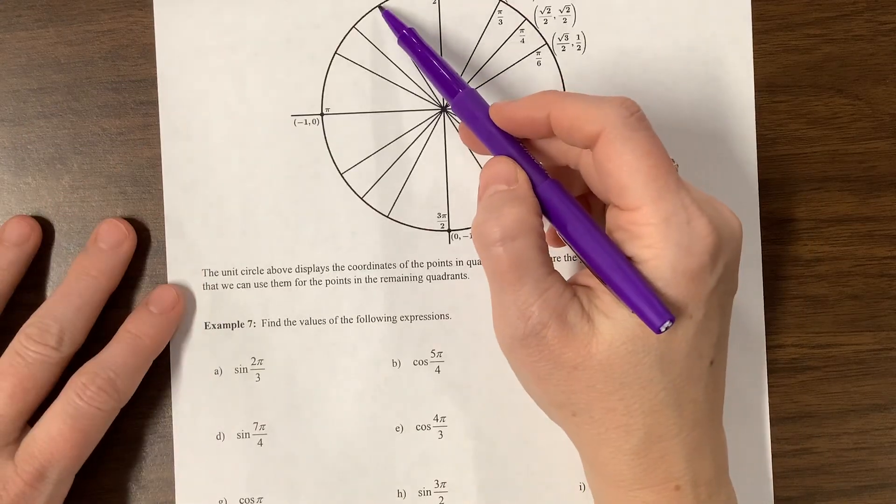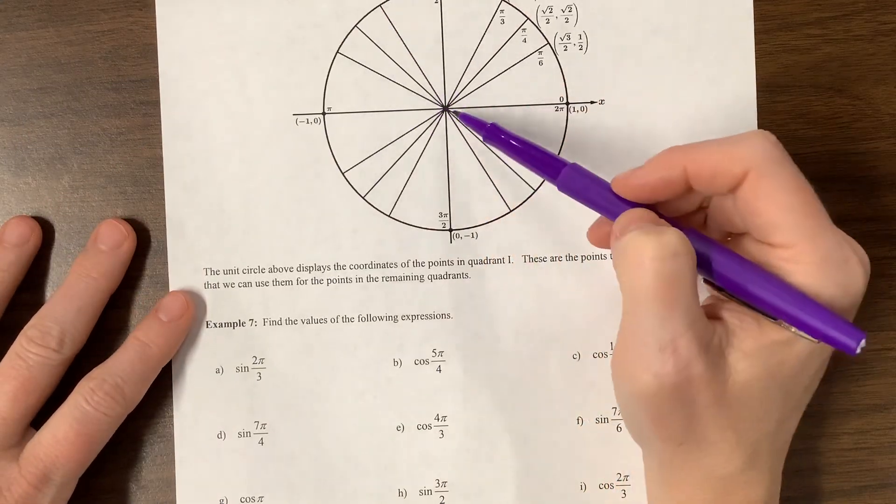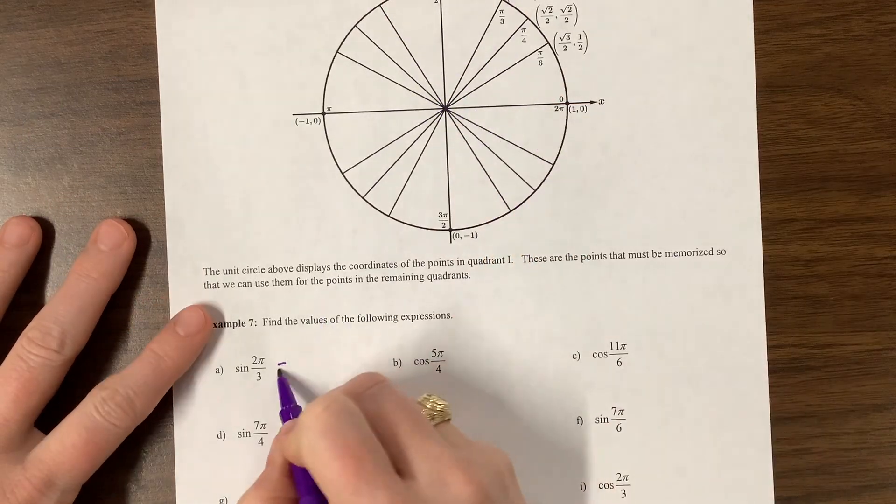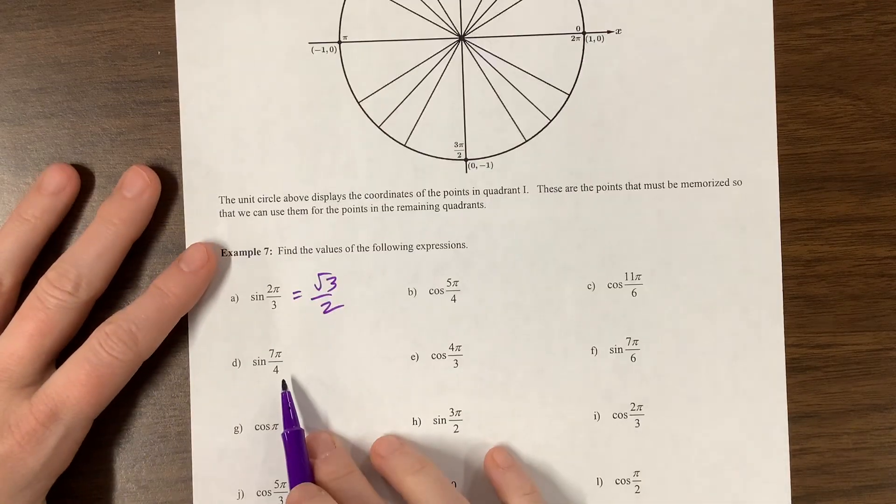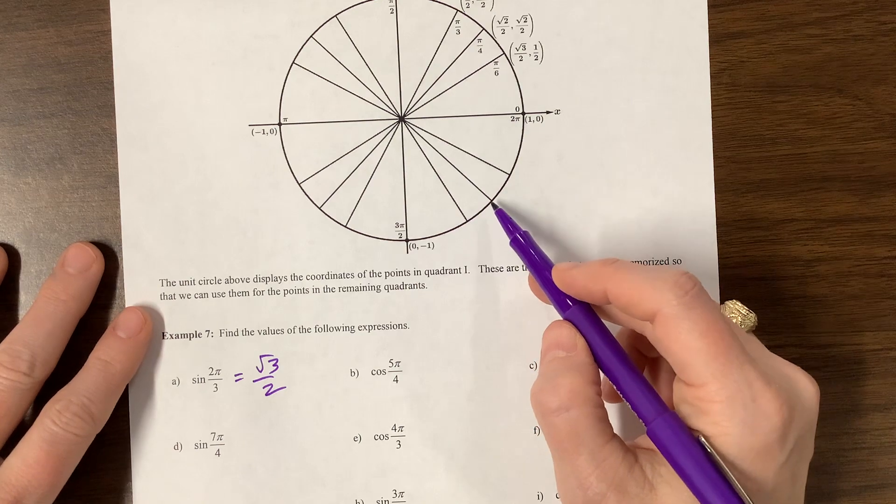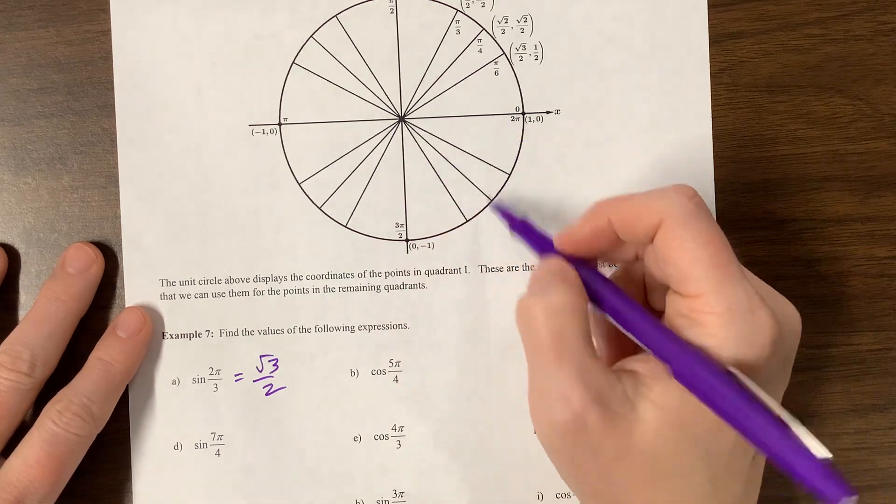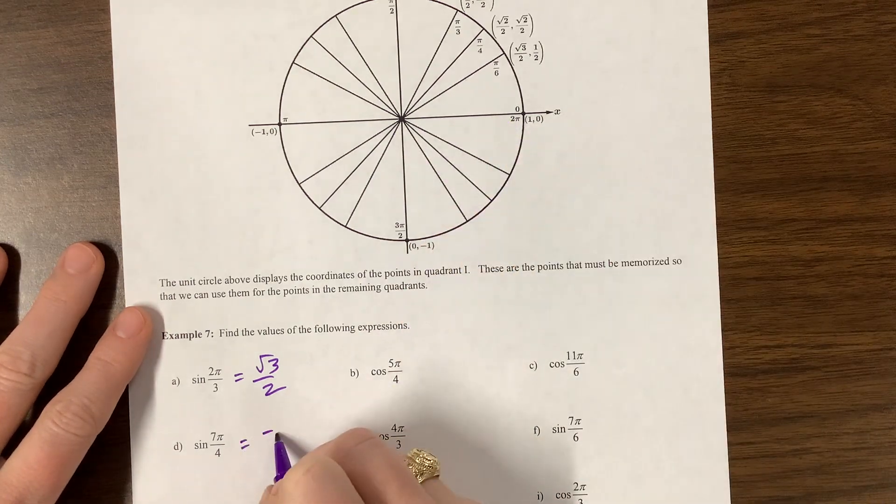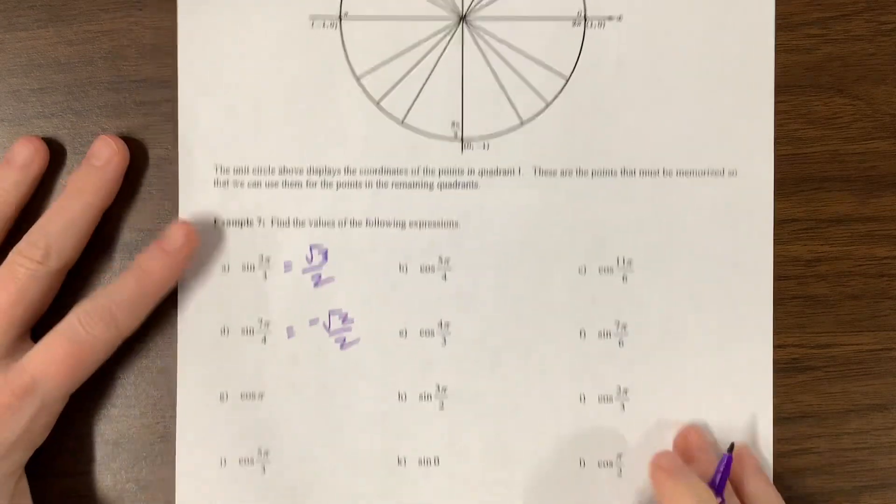So sine of 2 pi over 3. Where is 2 pi over 3? It's over here. Sine is the y value. I went up a lot. I went back a little and up a lot. So this is root 3 over 2. Sine of 7 pi over 4. Where is 7 pi over 4? It's right here. That's the root 2 over 2, and its sine is the y value. It was in a negative direction.